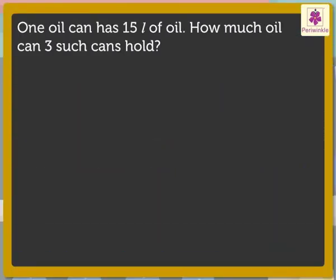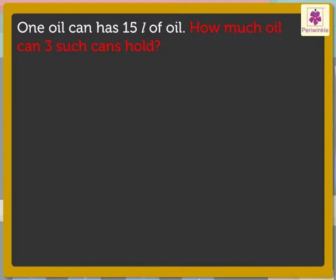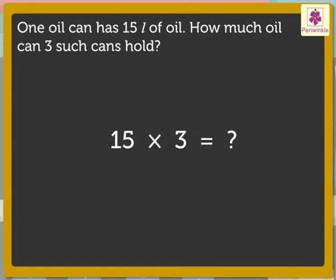First, we read the story. What information does it give? One oil can has 15 liters of oil. Let us see what we have to find out — the quantity of oil in three such cans. We have to multiply 15 by 3 to find the total. First, multiply the digit in the ones place.